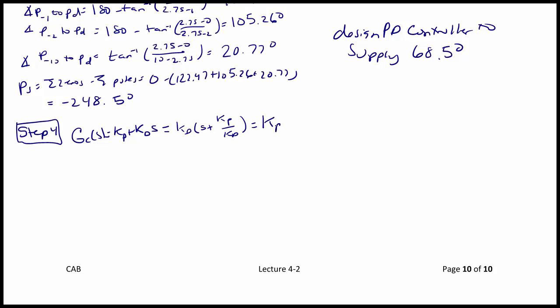We need tan(68.5°) to equal (2.75 - 0) / (-2.75 - Zpd). When we solve, we get that Zpd is equal to 3.833.